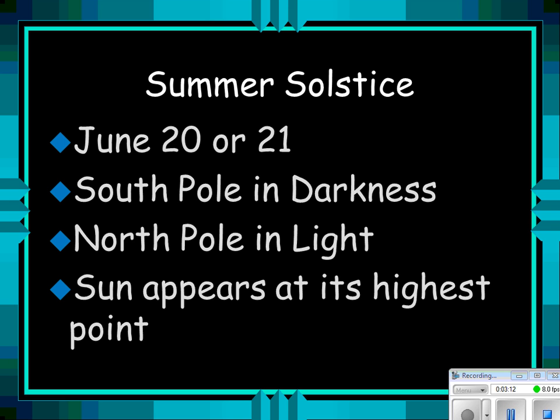The summer solstice happens around June 20th or 21st. The South Pole is in darkness because it's turned away from the Sun. The North Pole is in the light for 24 hours because it's tilted towards the Sun. The Sun appears at its highest point because in the Northern Hemisphere we're facing the Sun and tilted more towards it.